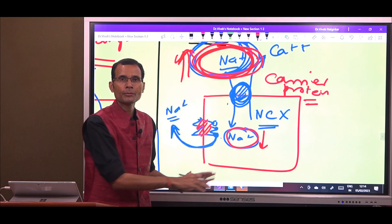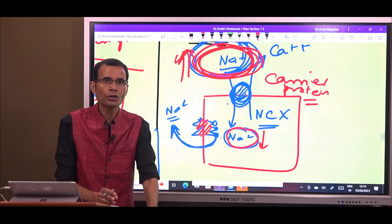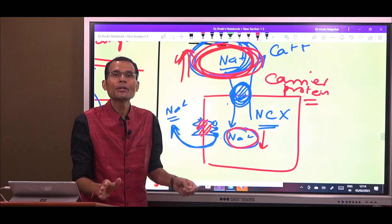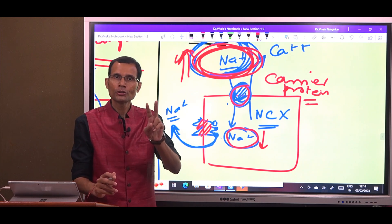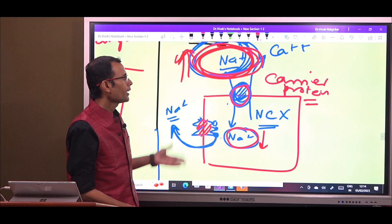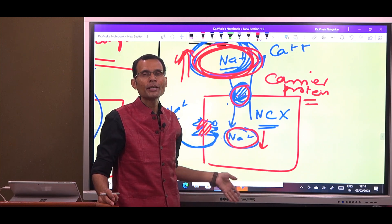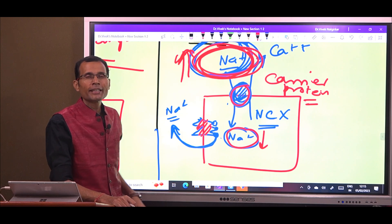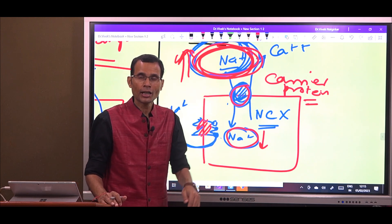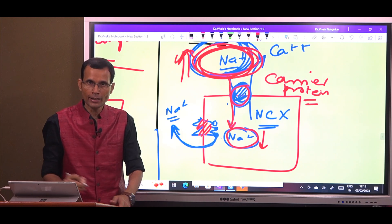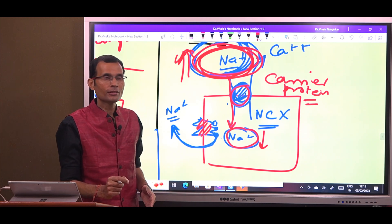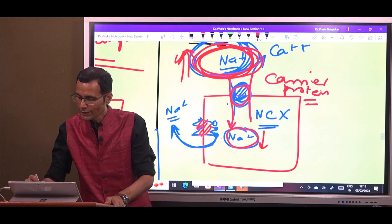Now, utilizing this concentration gradient — the potential energy stored in it — that pull will be used by the carrier protein to transport two substances. One is definitely sodium, because it is sodium's pull being used. In the case of co-transport, both sodium and the other substance enter the cell in the same direction. In the case of counter transport, sodium enters the cell from high to low, but the other substance goes from inside to outside.